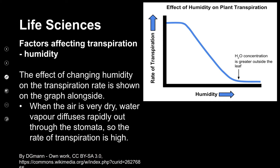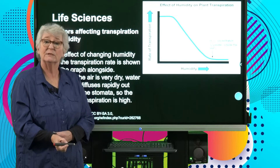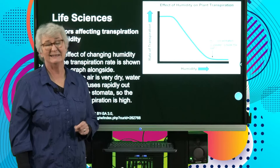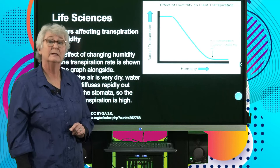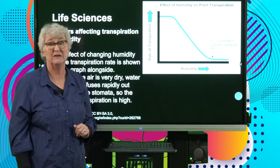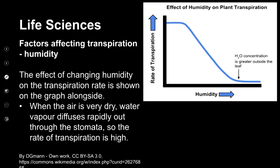The next factor is humidity — if there's moisture in the atmosphere, how will that affect transpiration? Looking at the results of experiments using potometers under different humidity conditions, scientists end up with a graph that looks very different to the others. At the beginning, when the air is very dry, water vapour diffuses rapidly out — this is high transpiration at low humidity. So transpiration occurs very quickly.